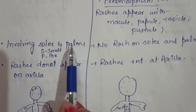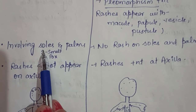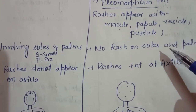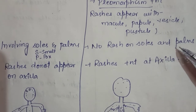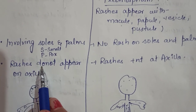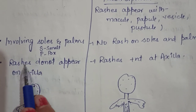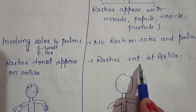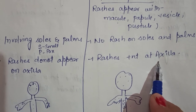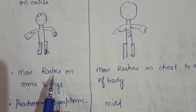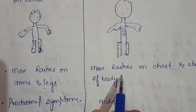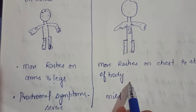Smallpox involves the palms and soles, whereas chickenpox will not have rashes on the palms. Smallpox will not have rashes in the axilla, whereas in chickenpox rashes are present in the axilla. Smallpox has more rashes on the arms and legs, whereas chickenpox has more rashes on the chest and abdomen.